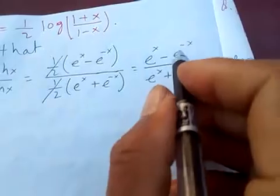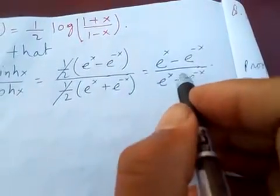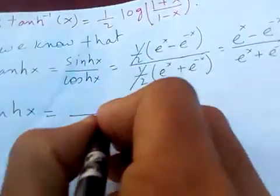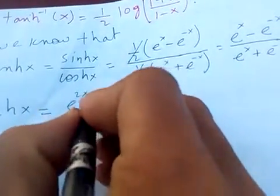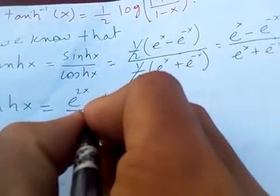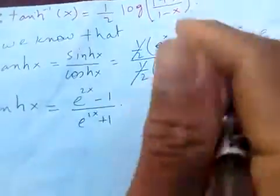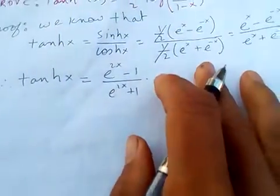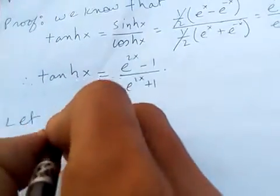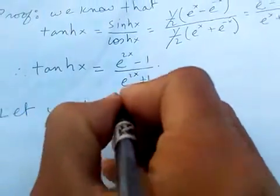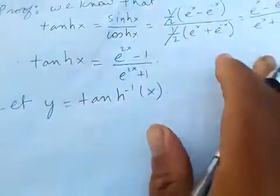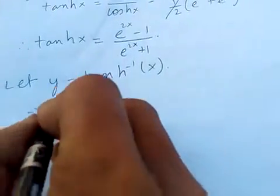Dividing numerator and denominator by e to the power x, we get e to the 2x minus 1 over e to the power 2x plus 1. Now let y equal to tanh inverse of x.